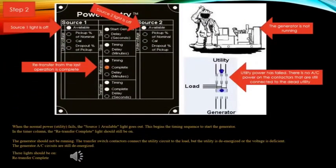In step two, the normal power has failed, and you'll see the source one available light is out. This begins the timing sequence to start the generator. In the timer column, the re-transfer complete light should still be on. There is no light that comes on to tell you it's timing for a start. The generator should not be running. The transfer switch contactors connect the utility circuit to the load, but the utility is de-energized or the voltage is deficient. The generator AC circuits are still de-energized.